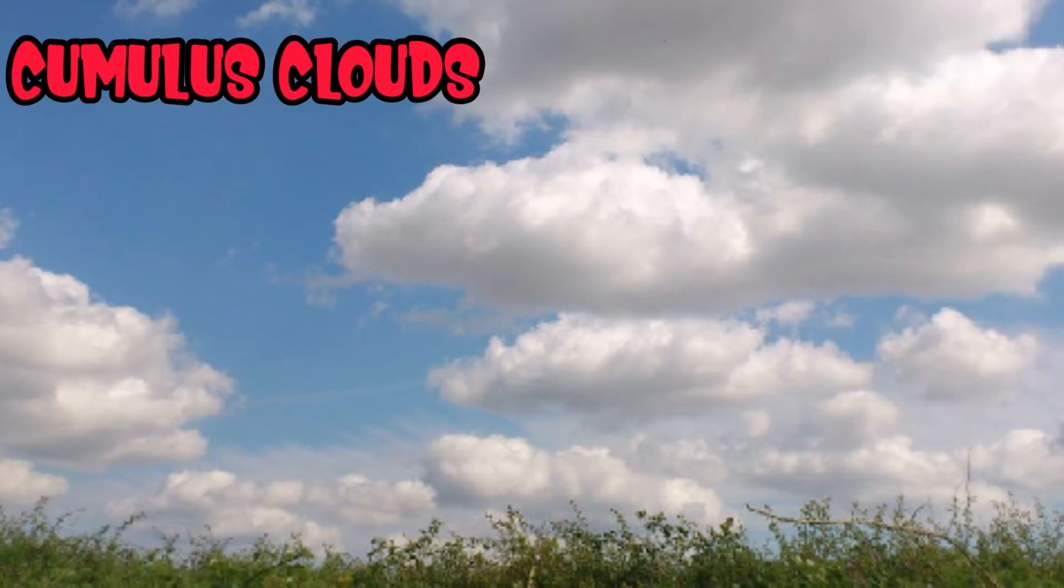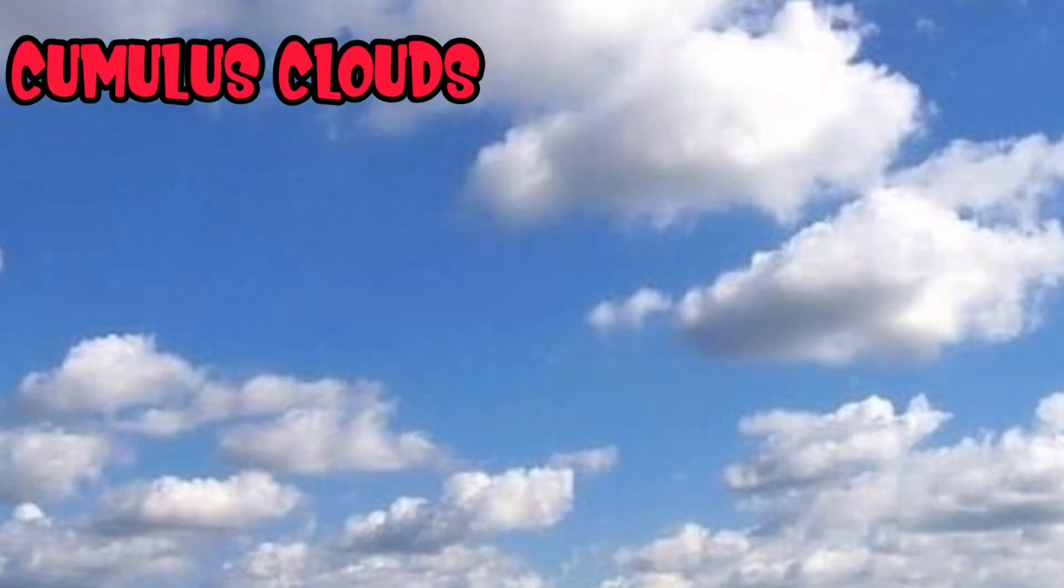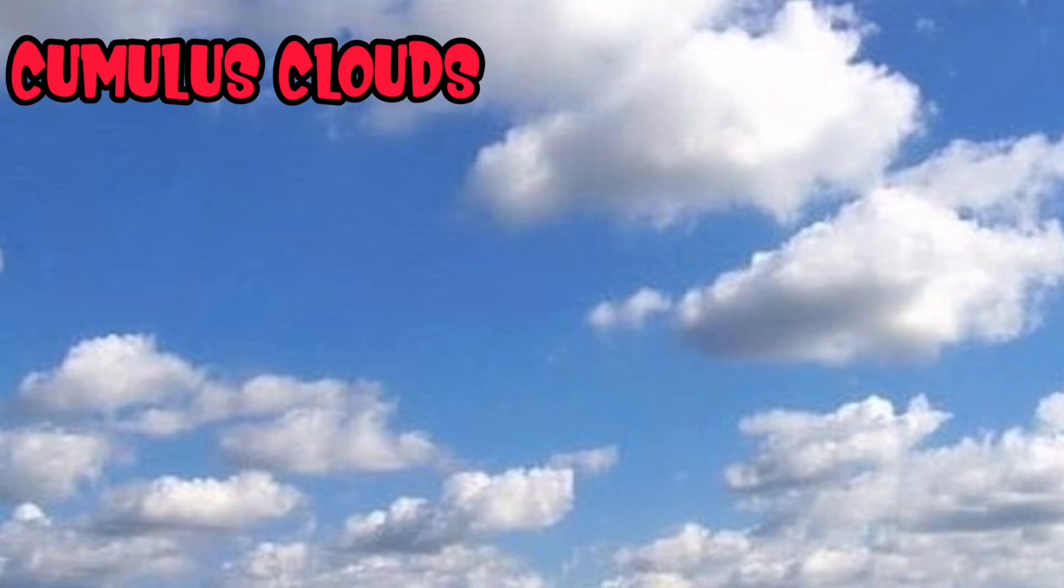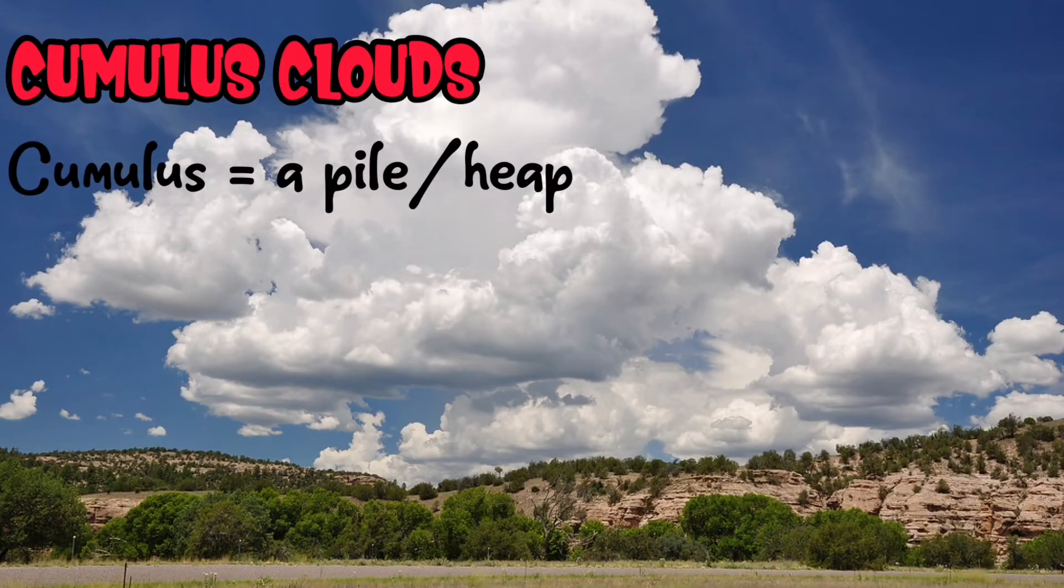Cumulus clouds look like white puffy balls of cotton. Cumulus clouds are usually less than 6,500 feet above the earth. The word cumulus means a pile or heap.